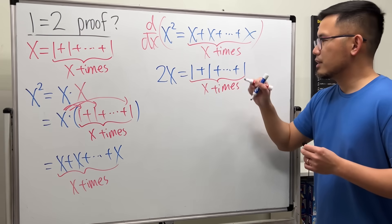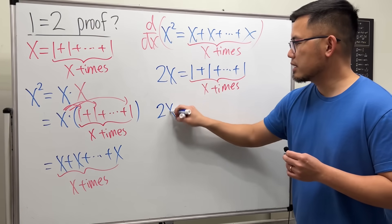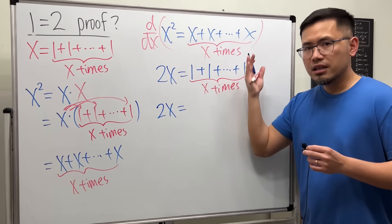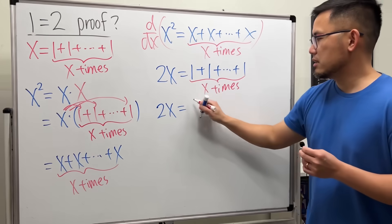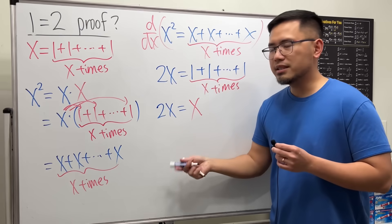Right, so on the left-hand side we have 2X, and on the right-hand side this right here is just like the situation here, we have X. So we see we have 2X is equal to X.